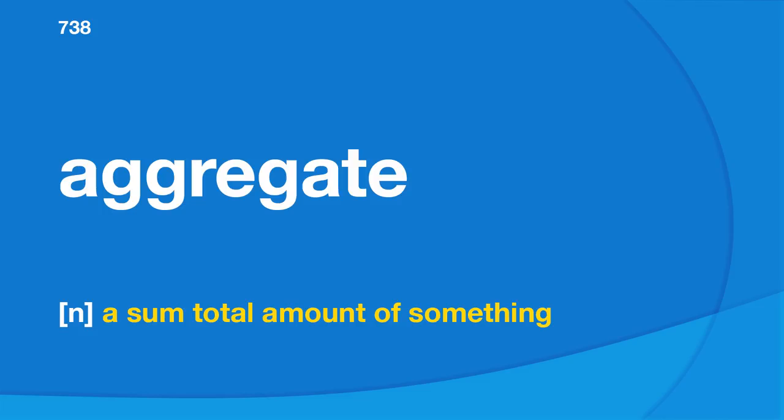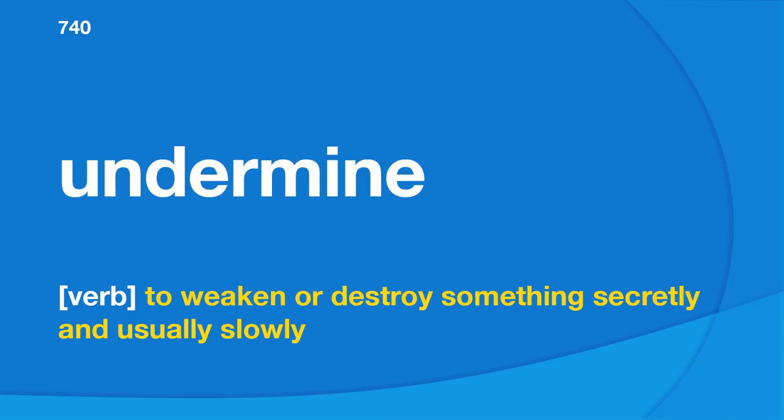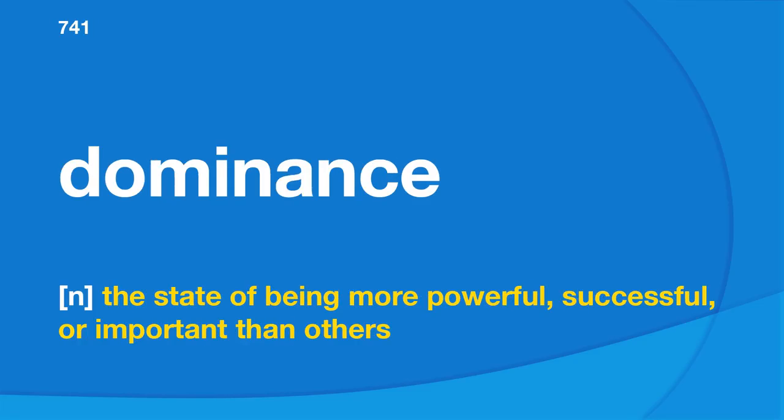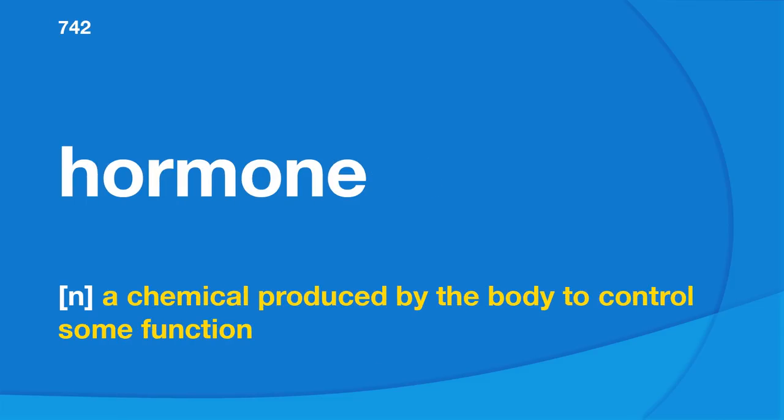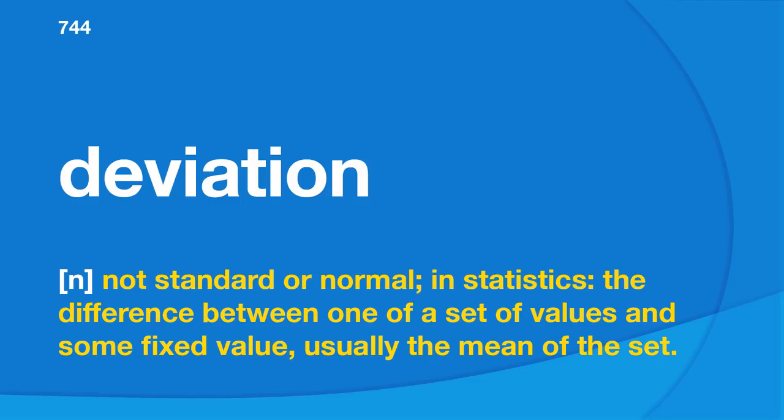Sustainable: capable of continuing for a long time at the same level, does not damage the environment. Aggregate: a sum, total amount of something. Neuron: a nerve cell, the basic building block of the nervous system. Undermine: to weaken or destroy something secretly and usually slowly. Dominance: the state of being more powerful, successful, or important than others. Hormone: a chemical produced by the body to control some function. Deviation: not standard or normal; in statistics, the difference between one of a set of values and some fixed value, usually the mean of the set.